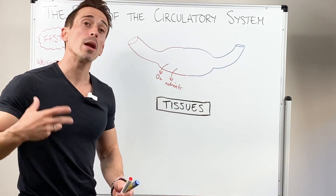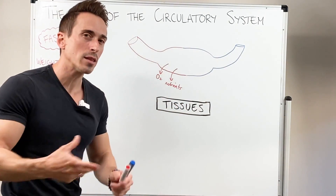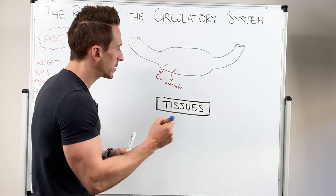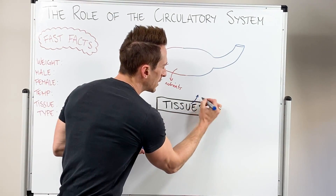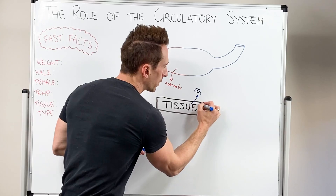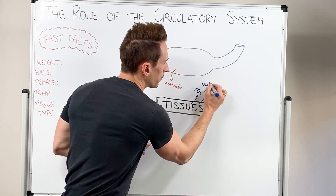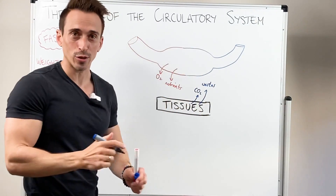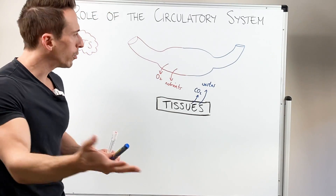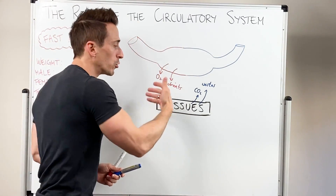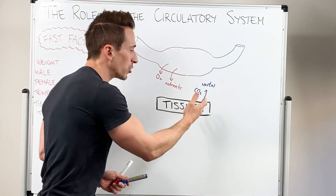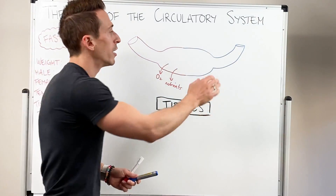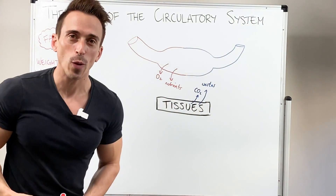But when the tissues do this they release by-products — what we call metabolic by-products — and if they remain in the body they can become quite toxic. So that means the tissues will release things like carbon dioxide and wastes, and these need to be taken away by the circulatory system. So the primary role is to deliver oxygen and nutrients to the tissues, and for the tissues to release waste and carbon dioxide for the circulatory system to take away.